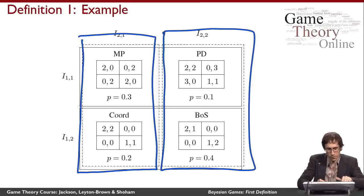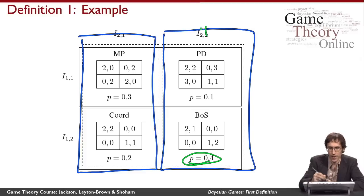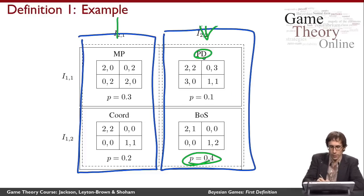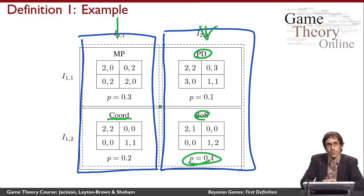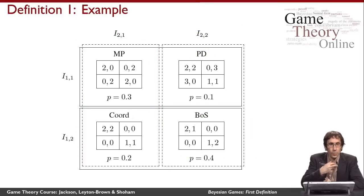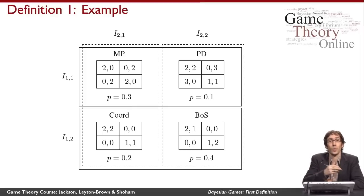Continuing our example: if Battle of the Sexes was the game randomly chosen by nature, player two would find out he was in the equivalence class containing Prisoner's Dilemma and Battle of the Sexes, thinking either could be the real game. The ground truth is Battle of the Sexes, but player two considers Prisoner's Dilemma possible, while player one considers Coordination possible. When deciding what action to take, players must act without fully knowing what game is being played.